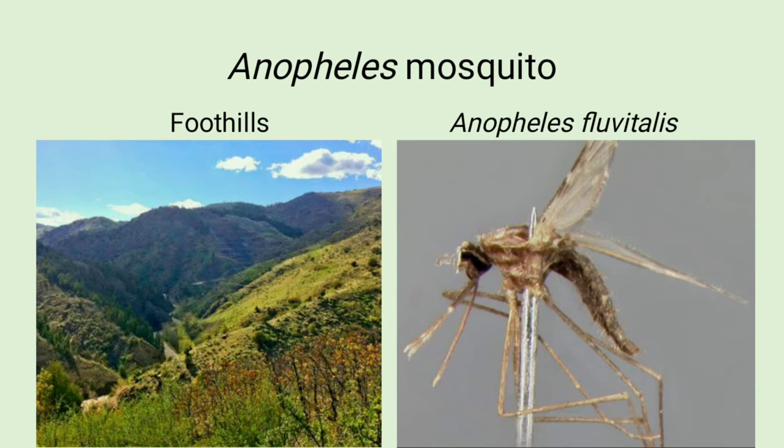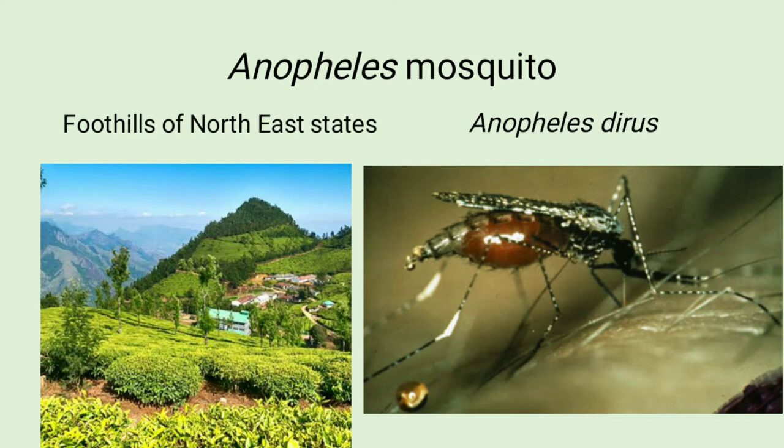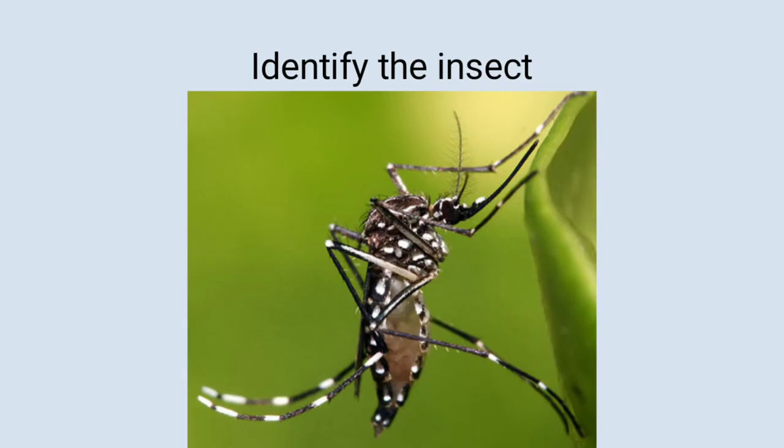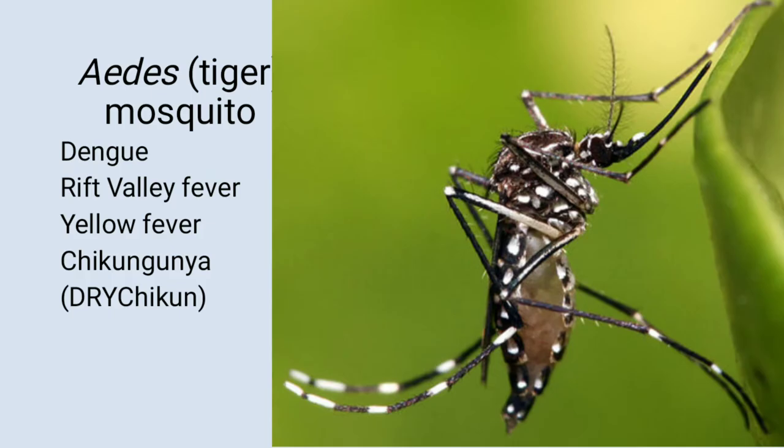In foothills of northeast states there is Anopheles dirus. In brackish water we see Anopheles sundaicus.